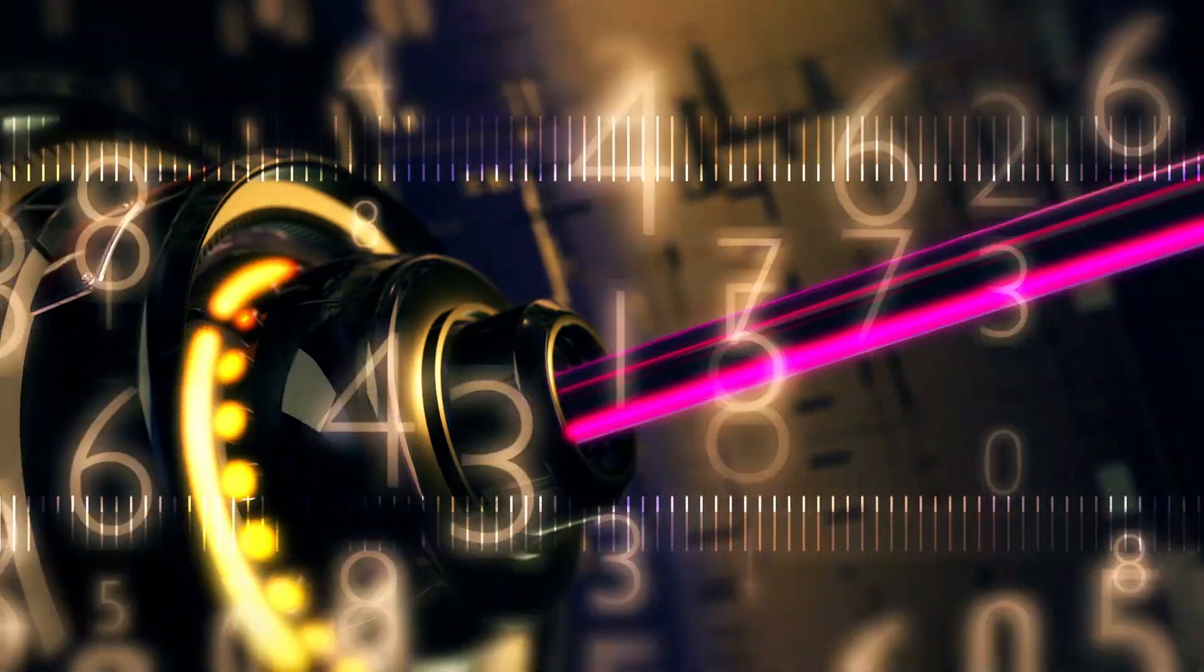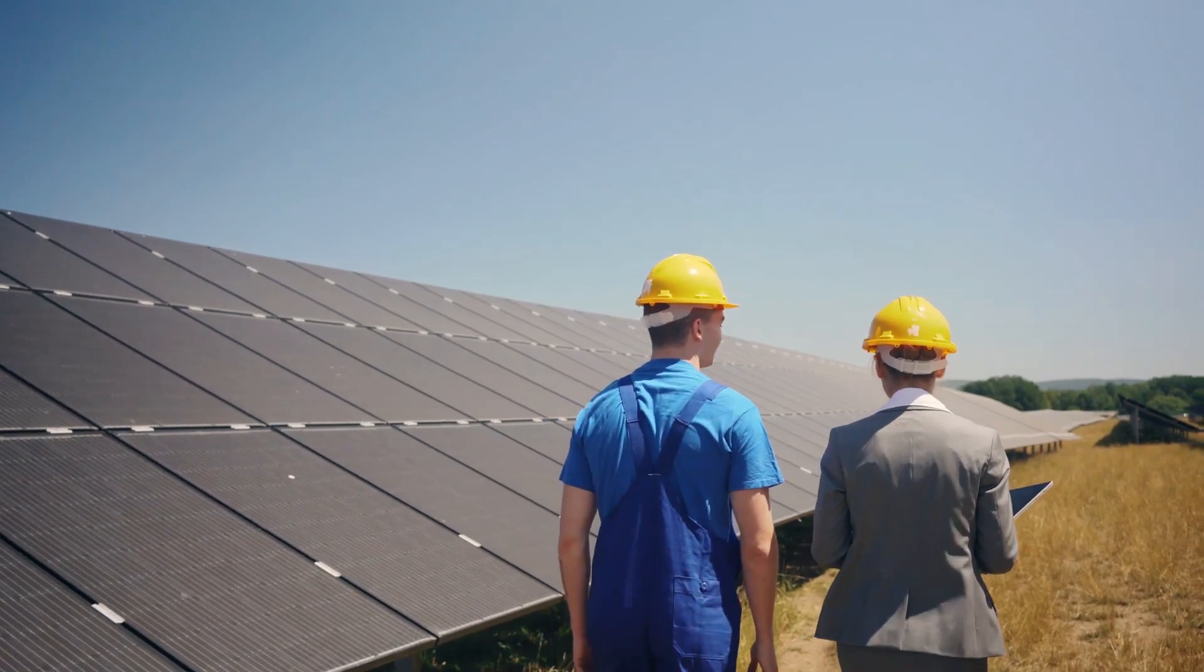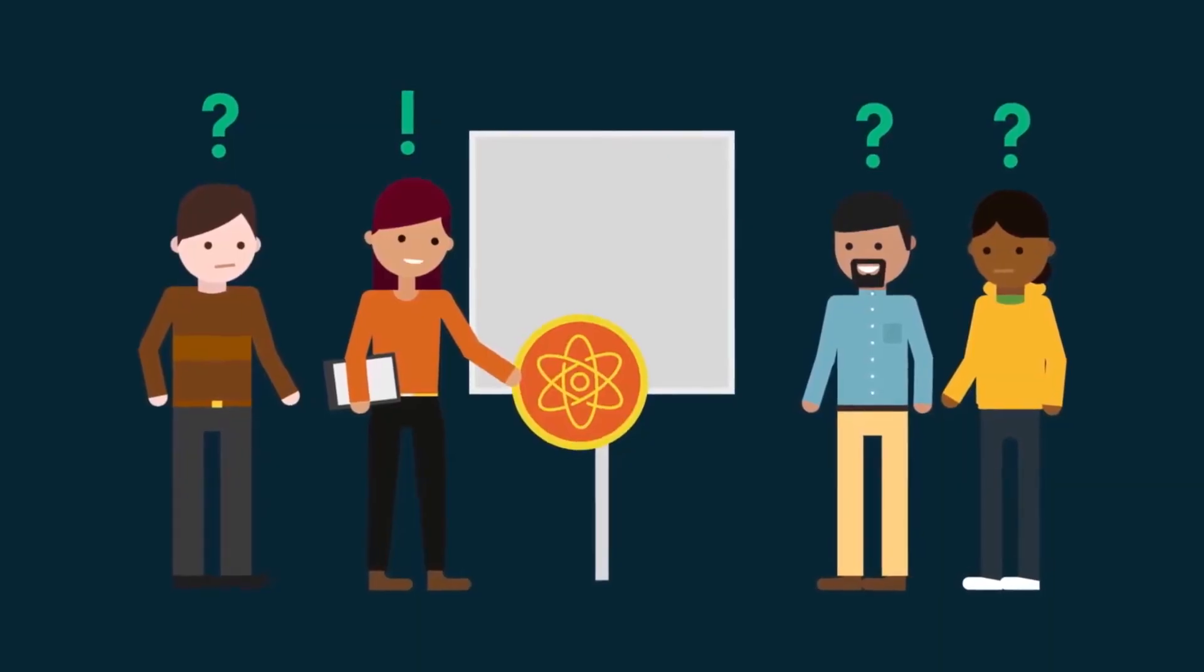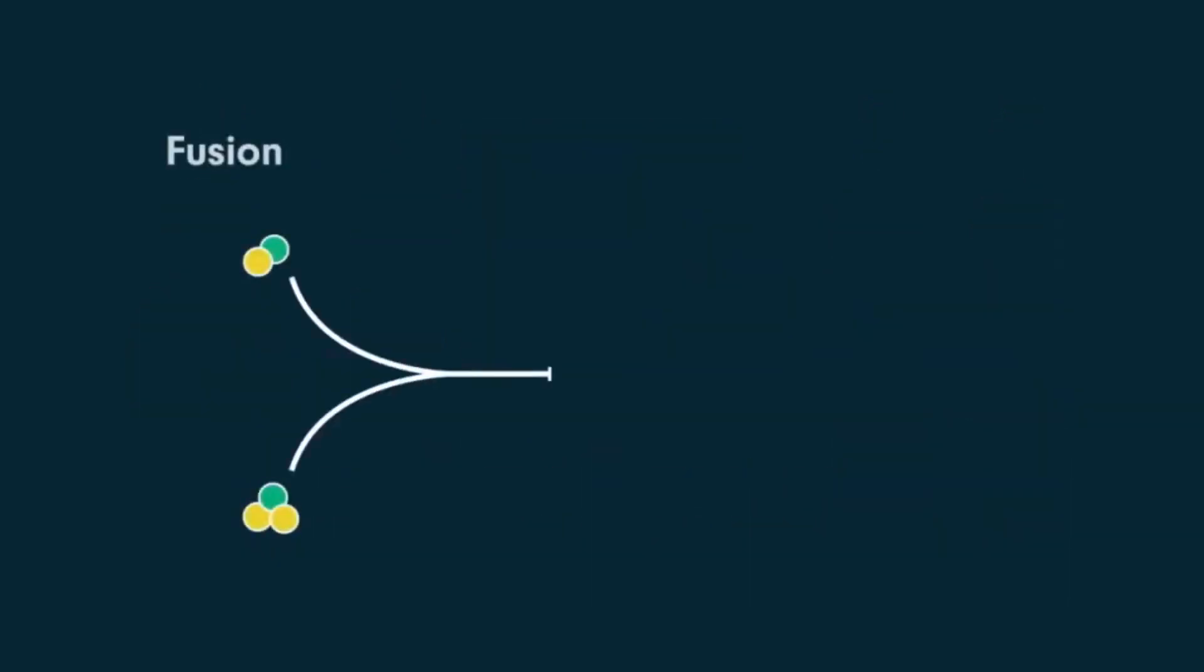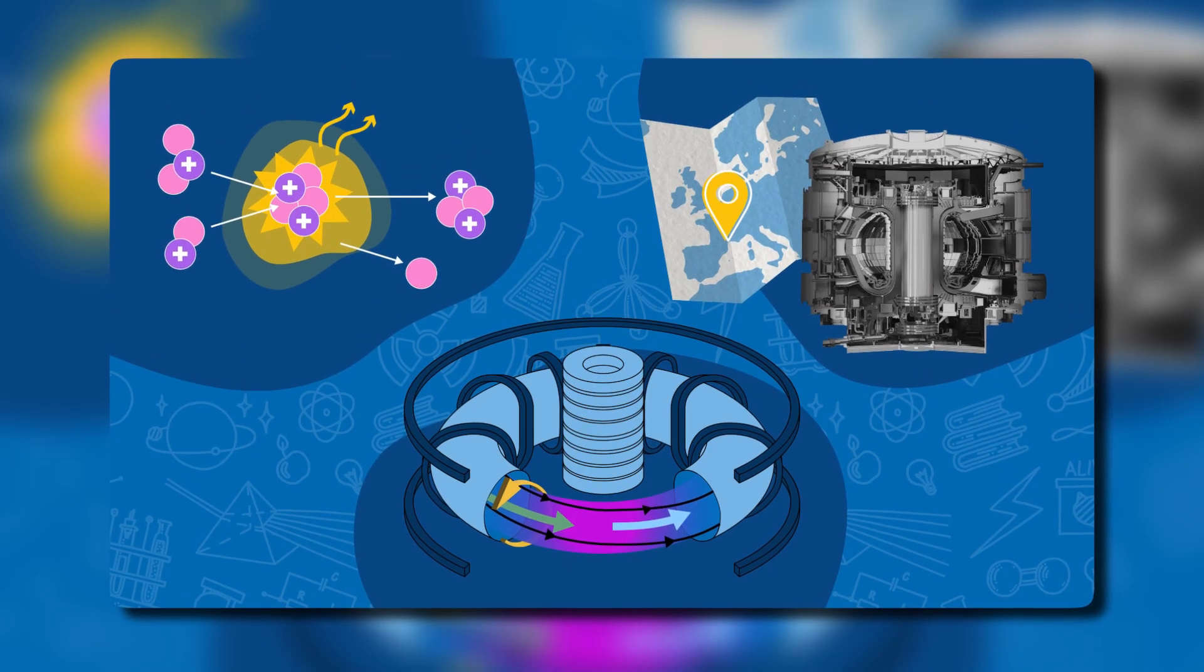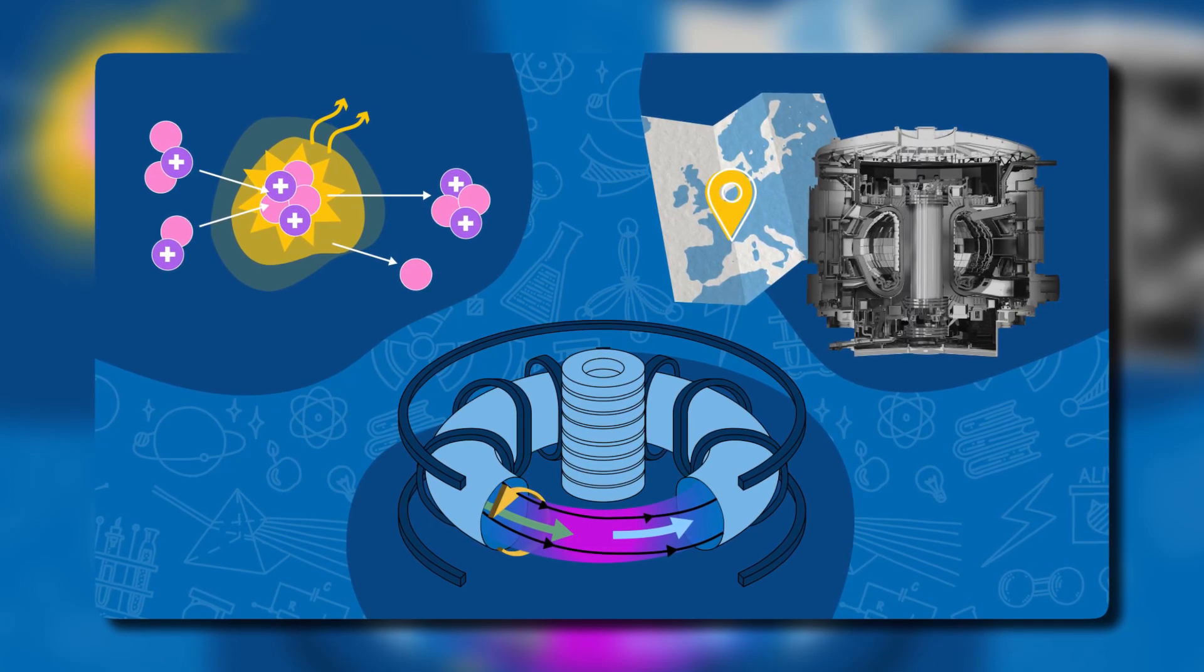This achievement marks a remarkable milestone in the field of nuclear fusion, bringing us one step closer to developing a sustainable and limitless energy source. The EAST reactor uses a process called nuclear fusion, where they combine two atomic nuclei to make a heavier one, and bam, energy is released. It's like an atomic dance party in there. They use a magnetic field to contain and heat the plasma to the necessary temperature to make this happen.